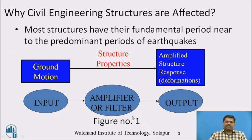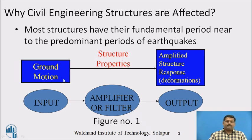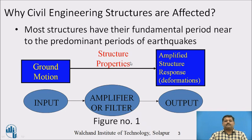This is explained in Figure 1. Ground motion is the input — that is the earthquake — and the output is amplified structural response, generally in the form of deformations. The intermediate part between input and output represents structure properties. If proper structure properties are selected, this acts as a filter reducing the output response. If structure properties are inappropriate, it acts as an amplifier and produces very high deformations.